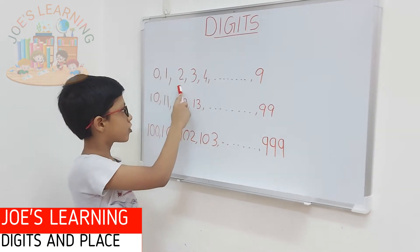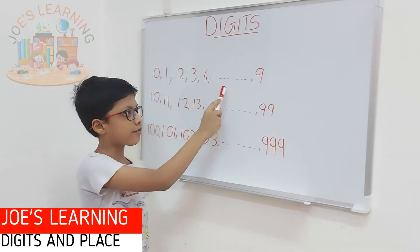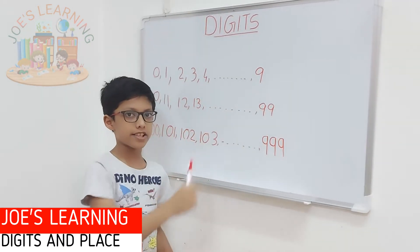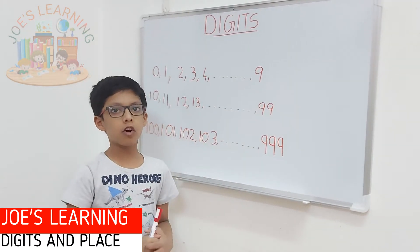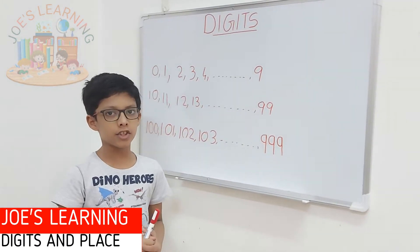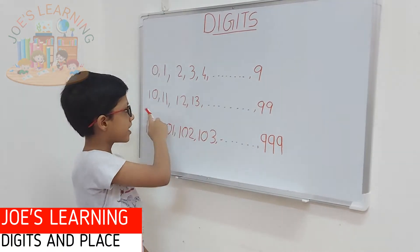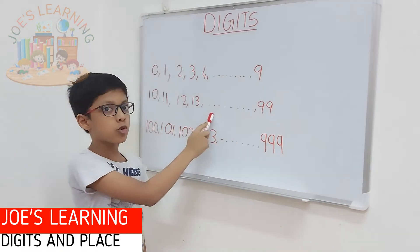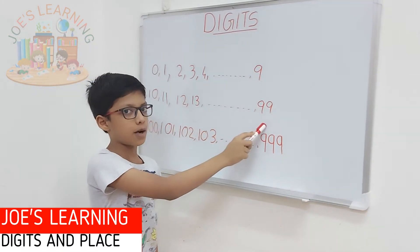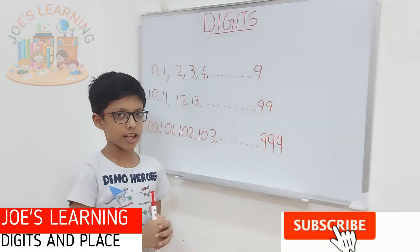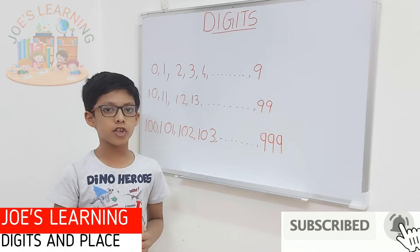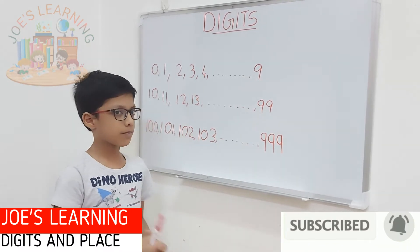0, 1, 2, 3, 4, up till 9 are called single digit numbers. 10, 11, 12, 13, up till 99 are called two digit numbers.